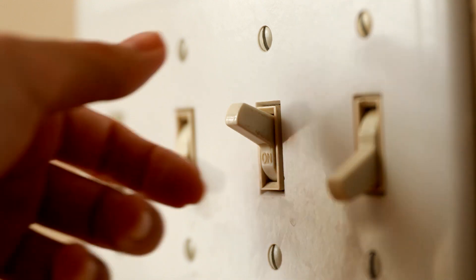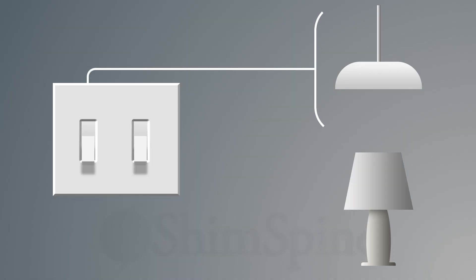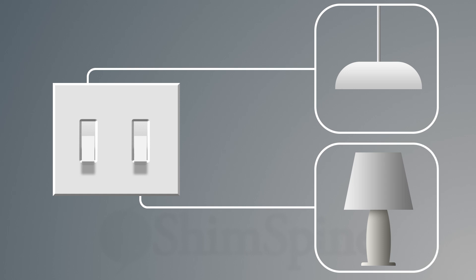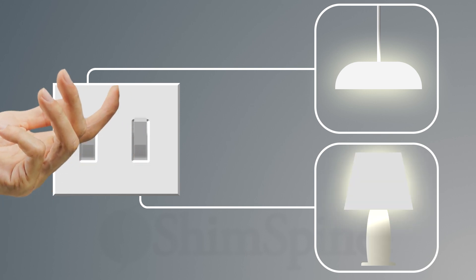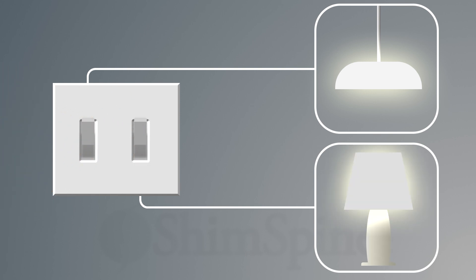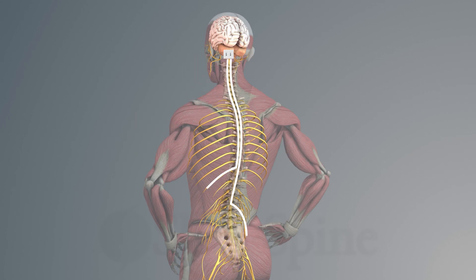The best analogy I can give is that of the light switch. Specific light switches go to specific lamps in the room. One light switch may go to the lamp in the kitchen. One light switch may go to the lamp in the front of the house. Each of these individual wires are like the nerves that go from the brain to a certain part of your body.